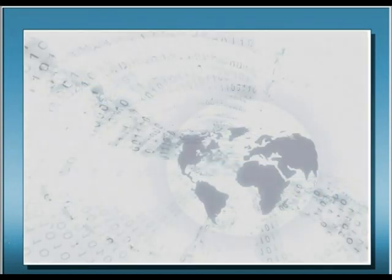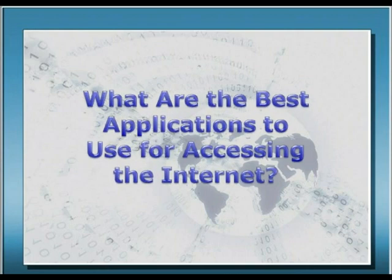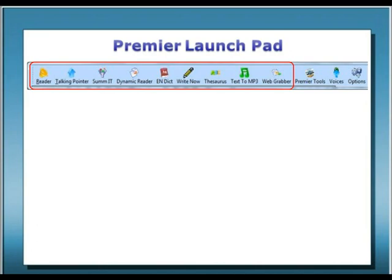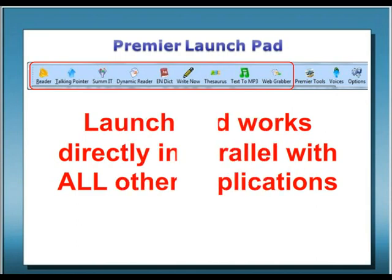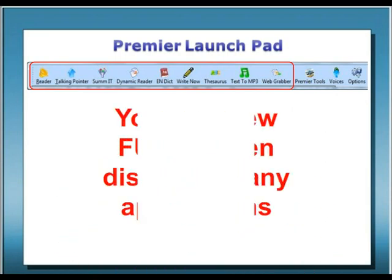What are the best applications to use when accessing the Internet? When you're using the Internet, you're presented with an almost limitless variety of information sources and formats. Just think of the advantages of having productivity tools at your fingertips that can make you more efficient and streamline your activities. The Premier LaunchPad is a great new tool that is ideally suited for this. With Premier's LaunchPad, there are nine major tools that can quickly improve your ability to navigate through the universe of information you'll encounter in the cloud. The groundbreaking advantages of the LaunchPad are that, unlike other real-time reading technology, it works directly in parallel with all of your other applications. You can still see full-screen displays of any other applications you have running.